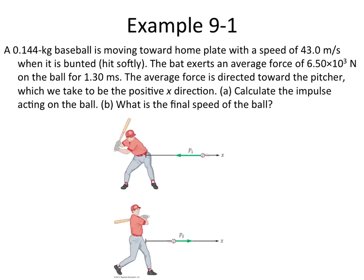Alright, so we have a 0.144 kilogram baseball. Let's go ahead and write that down. The mass of our baseball, m = 0.144 kilograms.